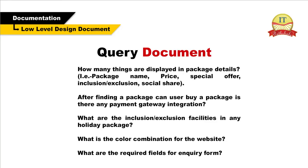Sample questions for a query document: How many things are displayed in package details — for example, package name, price, special offer, inclusion or exclusion, social share? After finding a package, can the user buy a package? Is there any payment gateway integration? What are the inclusion or exclusion facilities in any holiday package? What is the color combination for the website? What are the required fields for the inquiry form?